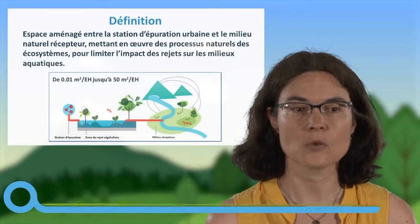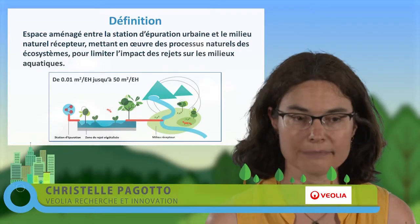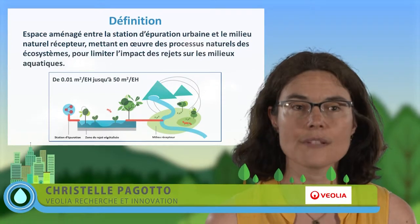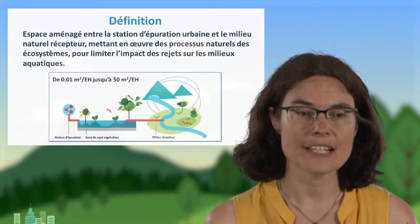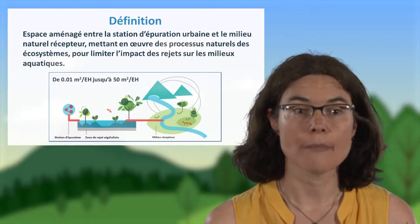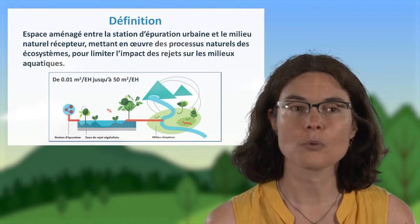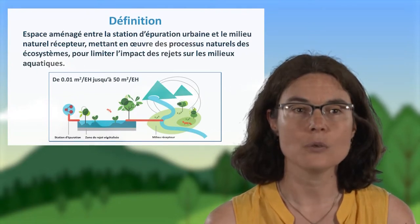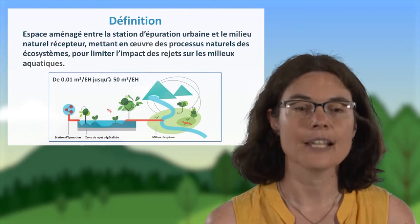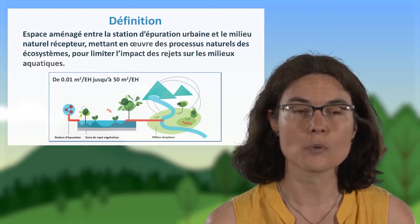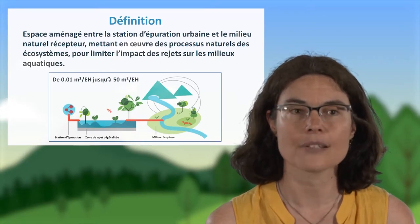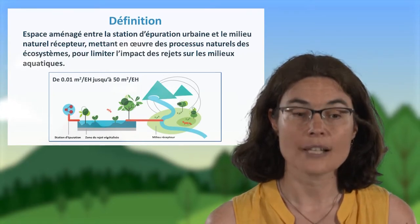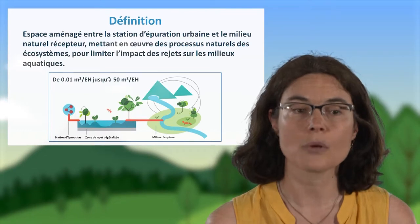Nous allons parler des zones de rejet végétalisées en sortie de stations d'épuration urbaine. Tout d'abord, une petite définition : ces zones de rejet végétalisées sont des espaces aménagés par l'homme entre la station d'épuration urbaine et le milieu naturel récepteur, qui vont mettre en œuvre des processus naturels des écosystèmes pour limiter l'impact des rejets de la station sur les milieux récepteurs.